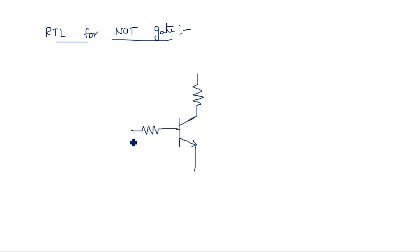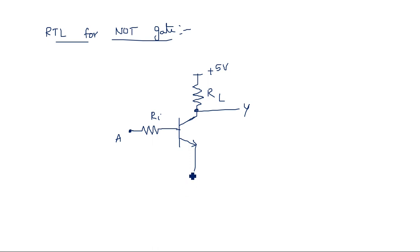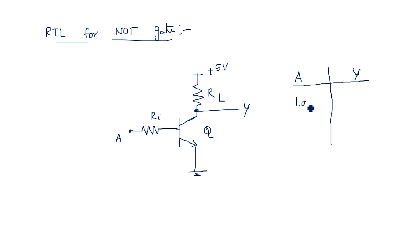The output is Y, and the supply is plus 5 volts — the maximum voltage in low-level devices is plus 5 volts. Let us consider RL as the load resistor and the input resistance as the input low voltage resistor. This is the transistor. Now apply input as low level to see how this transistor circuit acts as an inverter. Low level input is nothing but 0 volts; high level is nothing but 5 volts.